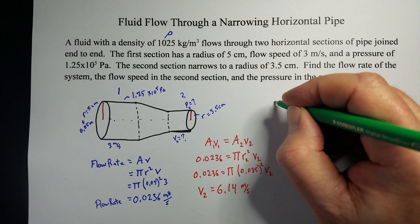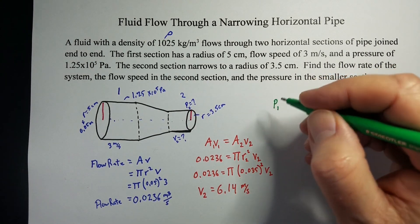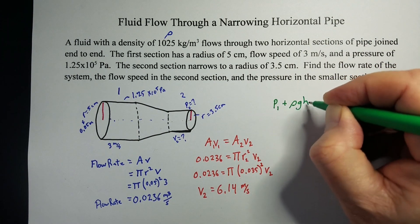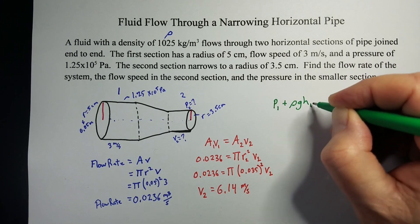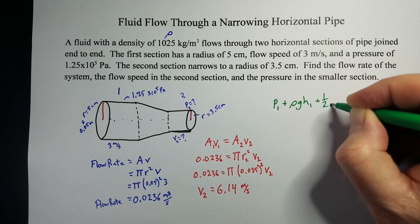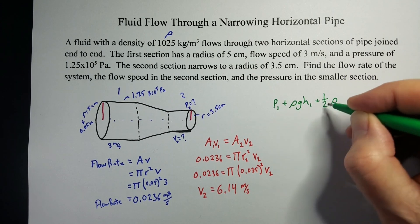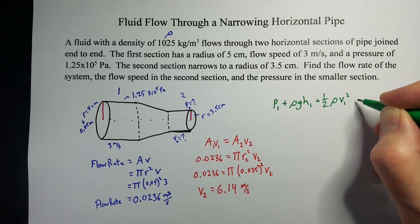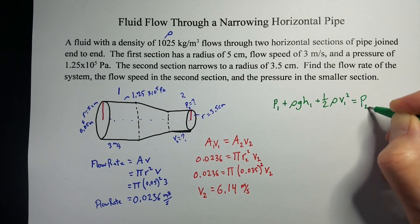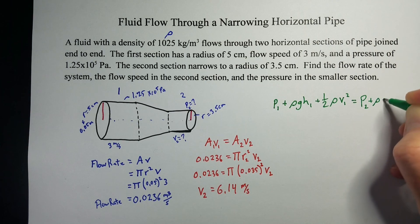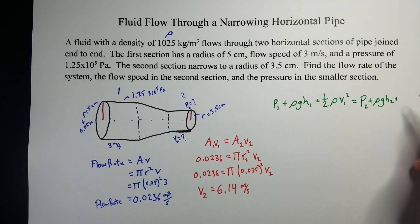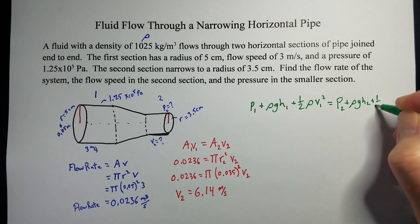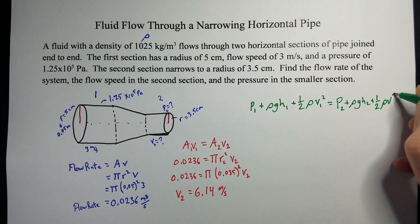Pascal's principle is this: the pressure at one side, plus rho gh at that side, the height of that side, plus one-half rho, rho is the density of the fluid through that section squared, equals the pressure in the new section, plus rho gh of the new section, plus one-half rho v squared of that new section.